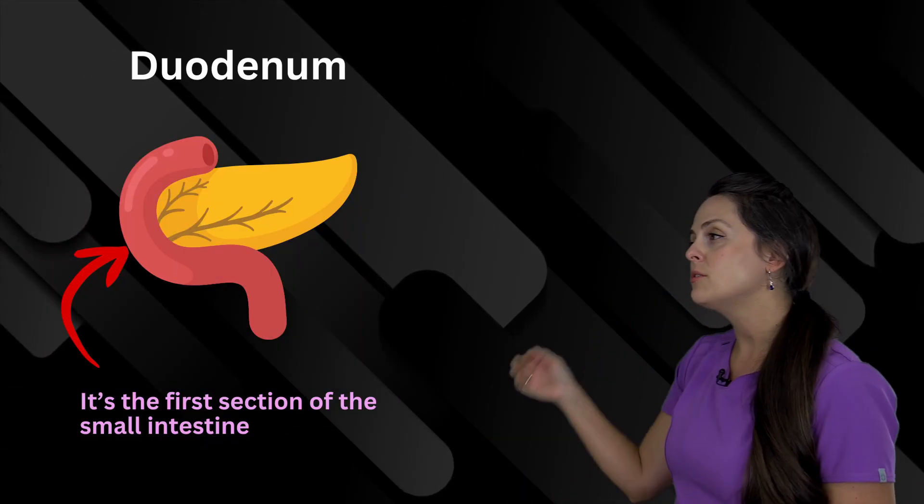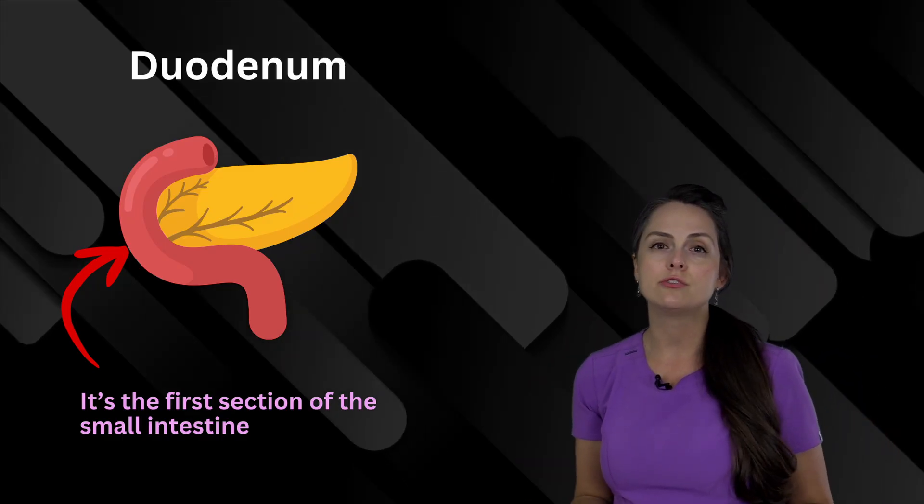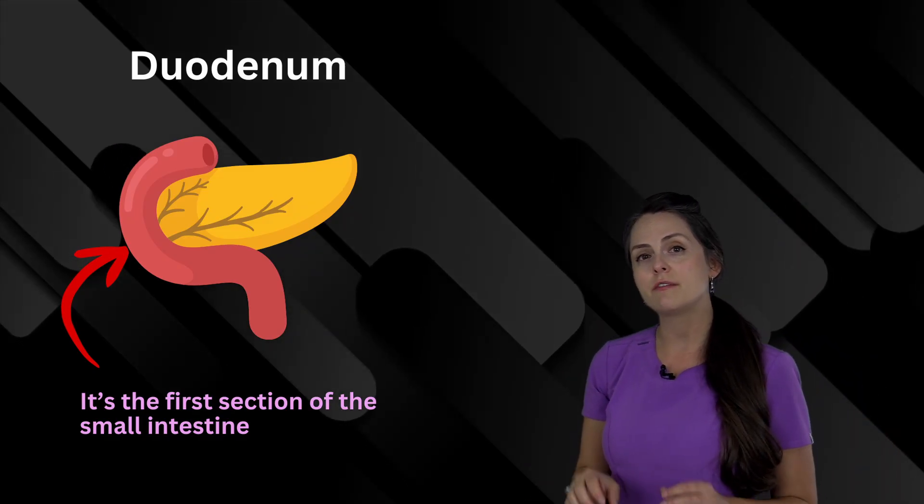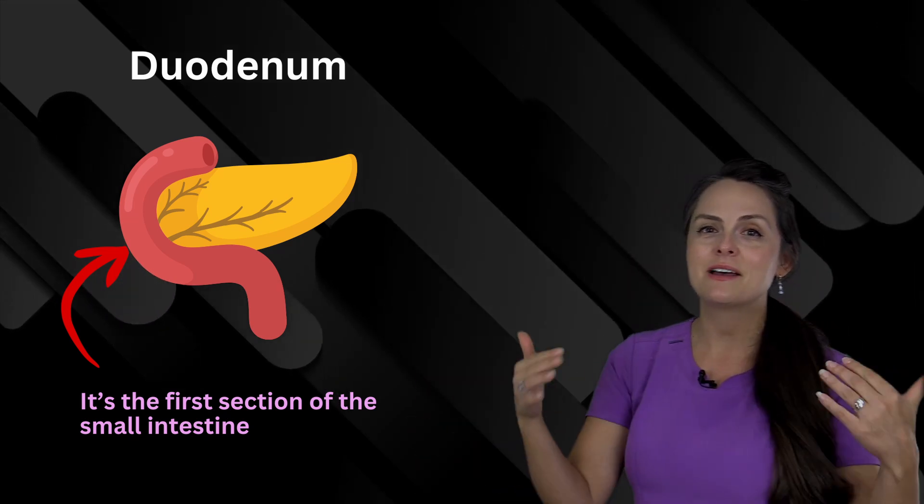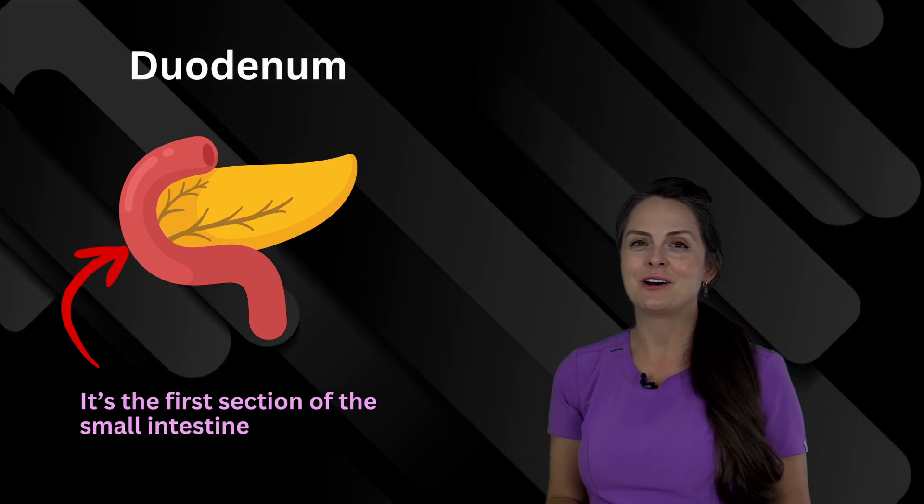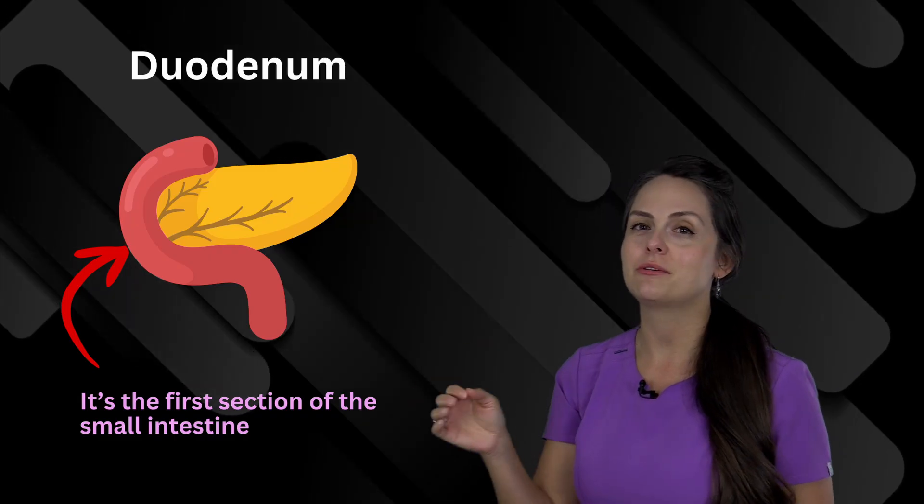Next is the duodenum, or some people like to say the duodenum, and this is the first part of the small intestine. Now as a side note, I'm from the south and some people in the south, especially the teachers that I've been taught by, pronounce this as duodenum.